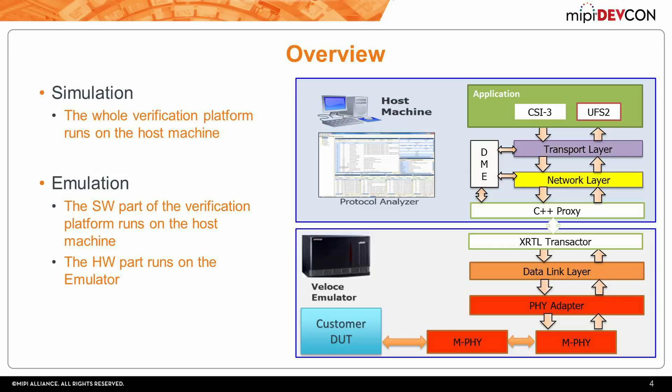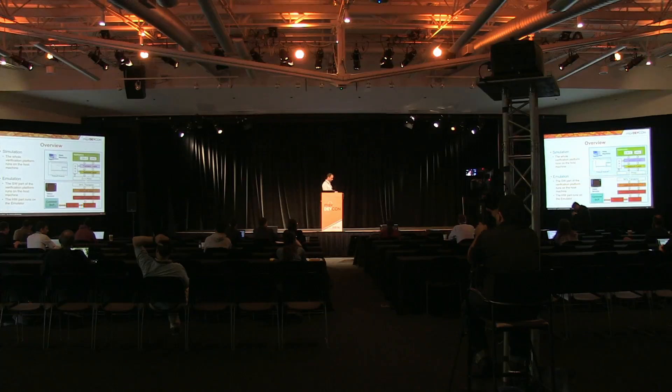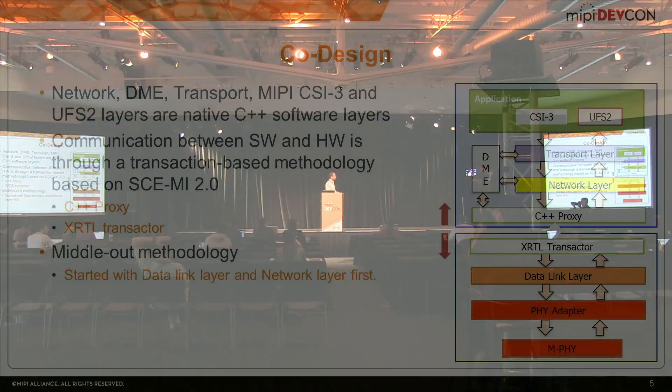Since our goal is simulation and emulation, for simulation the whole system runs on a host machine. For emulation, the software part runs on a host machine and the RTL part runs on an emulator. The communication between the software layer — the network layer and the DME layer written in software — and the data link and file adapter layers written in RTL is through a SCEMI pipe transaction-based methodology.